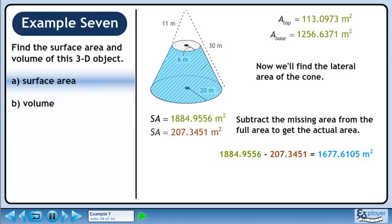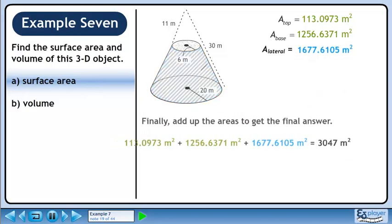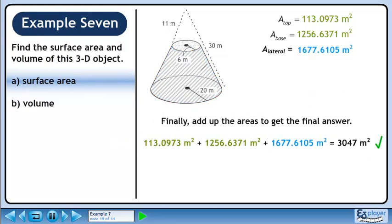Subtract the missing area from the full area to get the actual lateral area. This gives 1677.6105 square meters. Finally, add up all the areas to get the final surface area answer of approximately 3047 square meters.